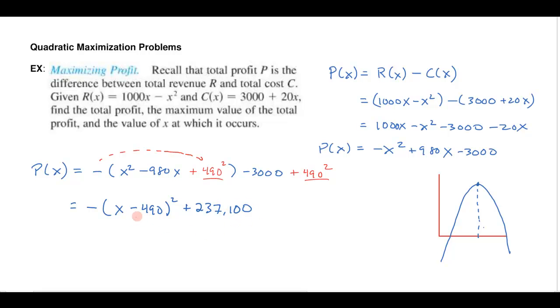So in terms of my graph, I know that now this is a parabola that's been shifted 490 units to the right and up 237,100 units. And so when I solve this problem this way by completing the square, I get not only the maximum profit,